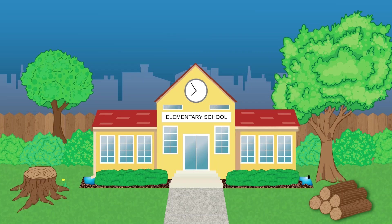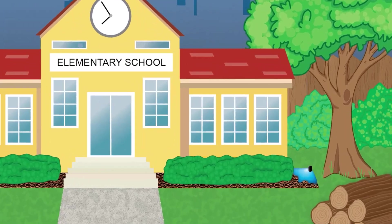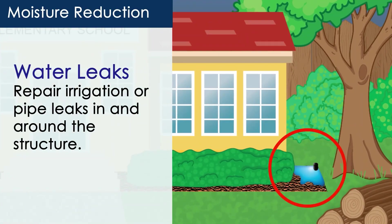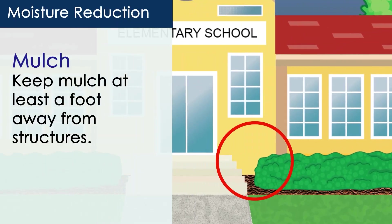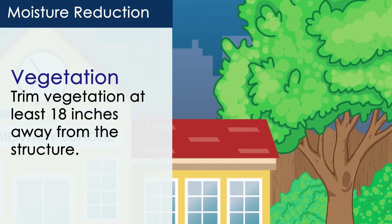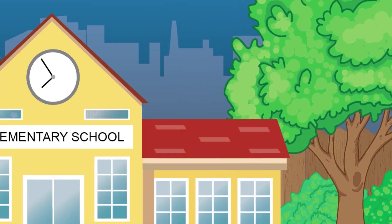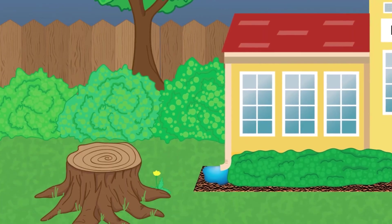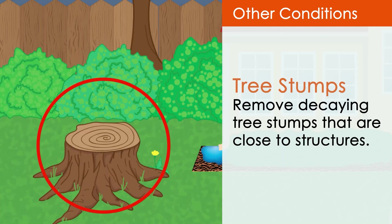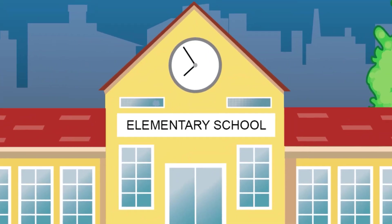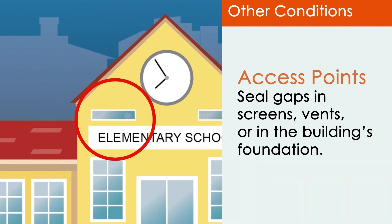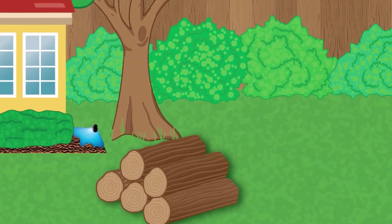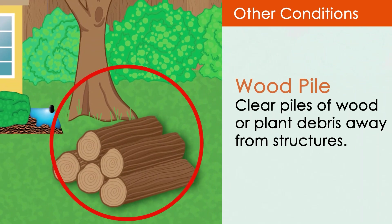Let's look at some examples of conducive conditions and best practices to eliminate them. Repair irrigation or pipe leaks in and around structures. Keep mulch at least a foot away from structures. Trim vegetation at least 18 inches away from the structure. Make sure that water is draining away from the building. Remove decaying tree stumps that are close to structures. Seal gaps or holes in screens, vents, and the building's foundation. Clear piles of wood or plant debris away from structures.